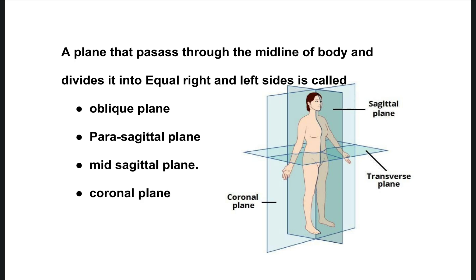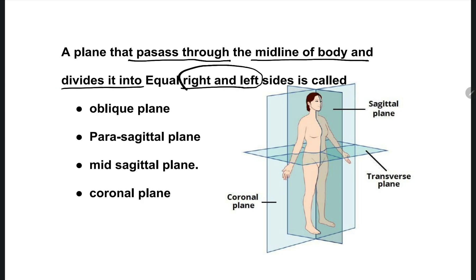The first question: a plane that passes through the midline of the body and divides it into equal right and left sides. The plane which goes from the head to foot and makes left and right parts — what is the name of that plane? Options are: oblique, parasagittal, midsagittal, coronal plane. The right one is option C, midsagittal plane.